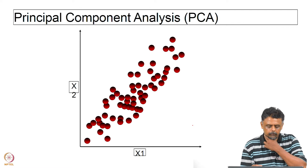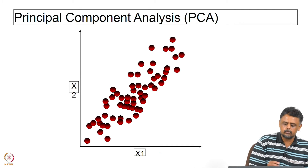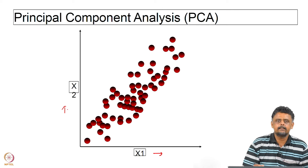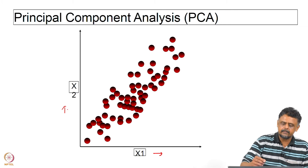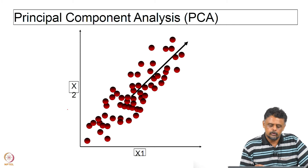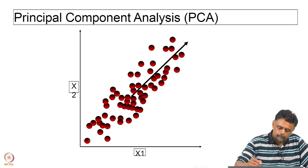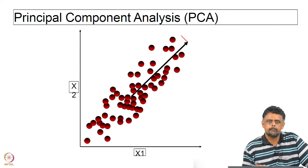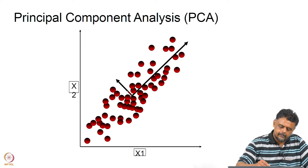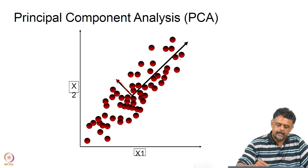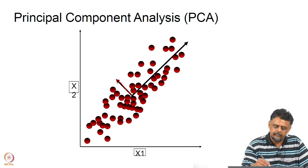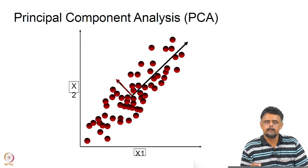Now let us consider this data set. It has two features X1 and X2. Visually we can see that a lot of the information is along one axis — the axis shown by the black arrow — which means that this axis has the maximum variance. We can construct this axis as the maximum variance direction, and we have another axis which is orthogonal to this one, at 90 degrees.